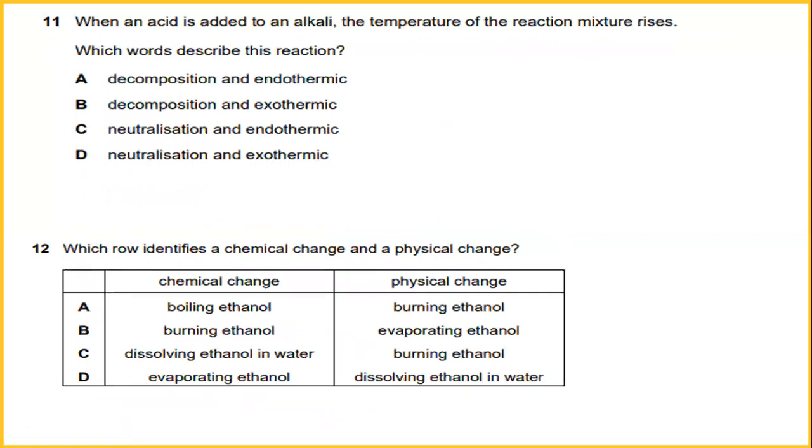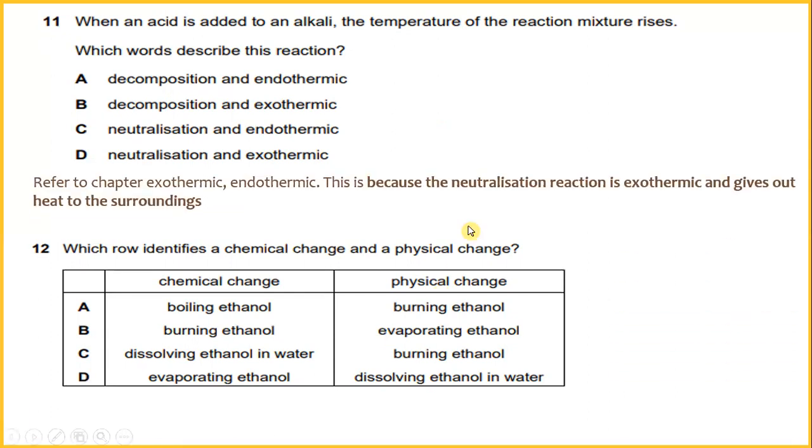When an acid is added to an alkaline, the temperature of the reaction mixture rises. Which would describe this reaction? It refers to chapter on exothermic and endothermic. This is because the neutralization reaction is exothermic and gives out heat to the surroundings. The answer is D.